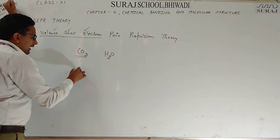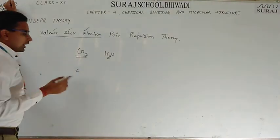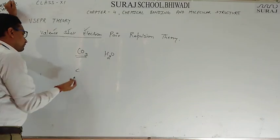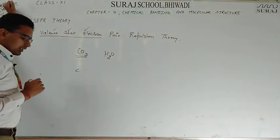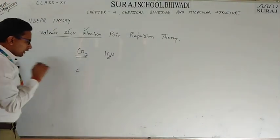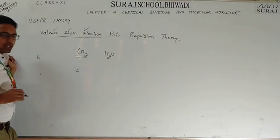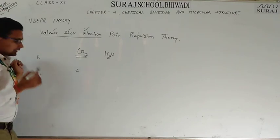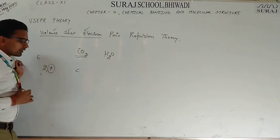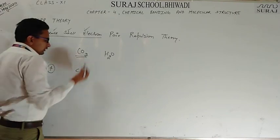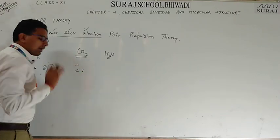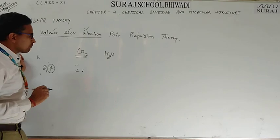For CO2, the central atom is carbon and around it is oxygen. This is the valence shell. So, how many valence electrons does carbon have? CO2 — carbon's atomic number is 6, with electron configuration 2, 4. So carbon has 4 valence electrons: 1, 2, 3, 4. It is 4.